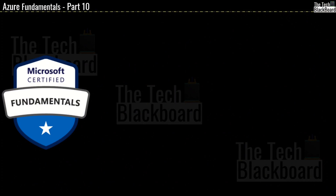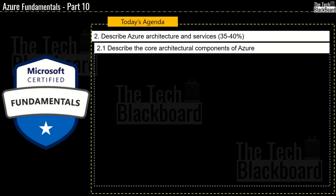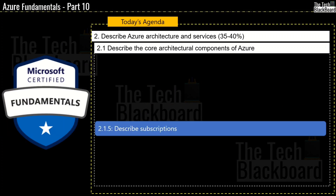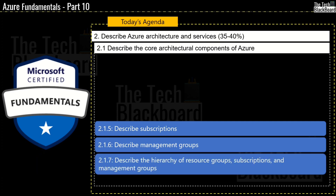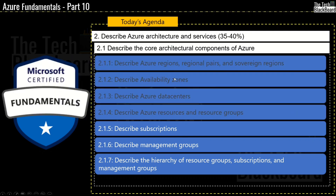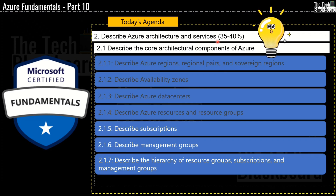Hello and welcome back to the Tech Blackboard. In today's episode we are going to understand how to describe subscription — this is section 2.1.5 — then we will describe management groups in section 2.1.6, and finally we will cover section 2.1.7, which is to describe the hierarchy of resource groups, subscriptions, and management groups. All these subsections are under the major section 2, which is to describe the Azure architecture and Azure services. This section is very important from the exam perspective as it alone commands 35 to 40 percent of the total exam questions.